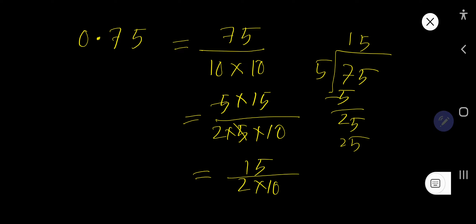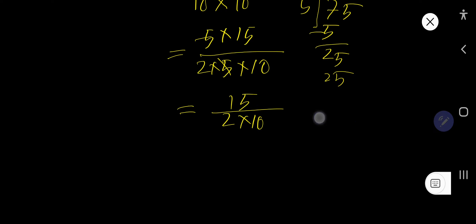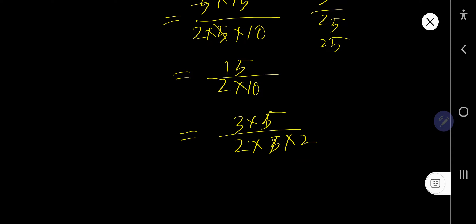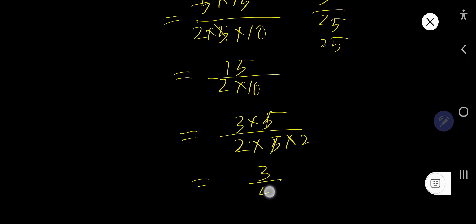This gives us a fraction, but we need to reduce it to lowest terms. We can break 15 as 3 times 5, and 10 as 5 times 2. The 5s cancel each other, so we are getting 3 over 4. This is the fully reduced form of the fraction.